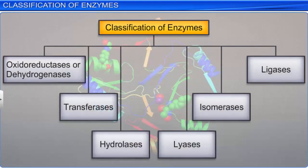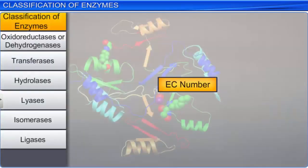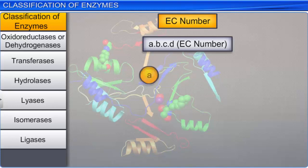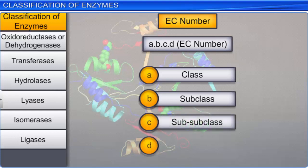Namely, oxidoreductases or dehydrogenases, transferases, hydrolases, lyases, isomerases, and ligases. Each of these classes is further divided into four to thirteen subclasses, named by a four digit number, or EC number. In an EC number, for example, A.B.C.D, A will denote the class, B the subclass, C the sub-subclass, while D will denote the sub-sub-subclass.